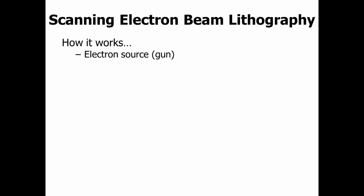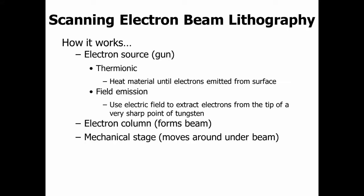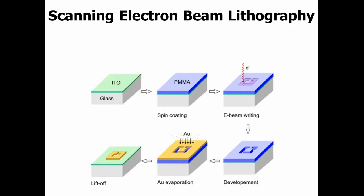With scanning electron beam lithography — and it's better with a picture — there's an electron gun at the top. You heat the material until electrons start being emitted, then use an electric field to extract electrons from the tip of a very sharp point of tungsten. A column forms the beam, and there's a stage at the bottom that moves the sample under the beam, controlled by a computer. In this example, they're using glass and different chemicals to etch a U-shape or sideways C. After gold is deposited and the photoresist is lifted, you're left with a small gold pattern.